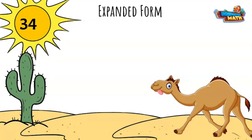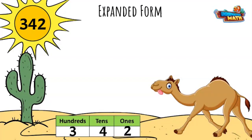With the number 342, I write the number in my place value chart to see the value of each digit. I start with the hundreds. There are three, that means there are three hundreds. My tens place has four.